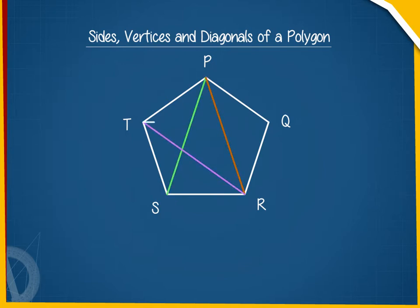The line segment that joins any two alternate or non-adjacent vertices of a polygon is known as the diagonal of the polygon.